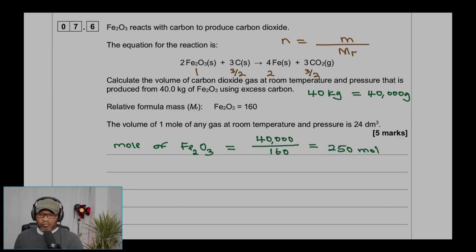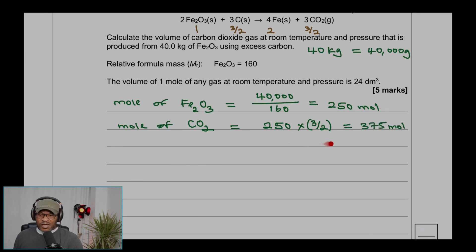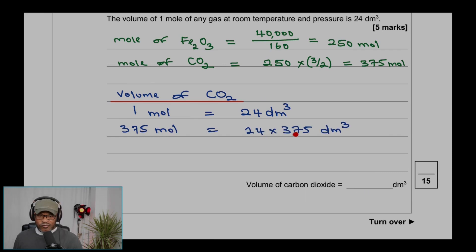The ratio is 1 Fe₂O₃ : 1.5 CO₂, so moles of CO₂ = 250 × (3/2) = 375 mol. Since 1 mol of gas = 24 dm³ at RTP, volume of CO₂ = 375 × 24 = 9,000 dm³.